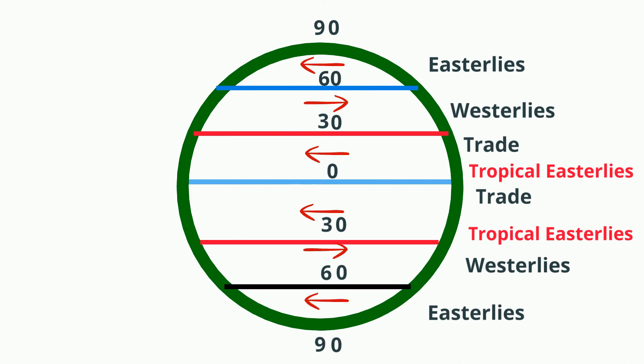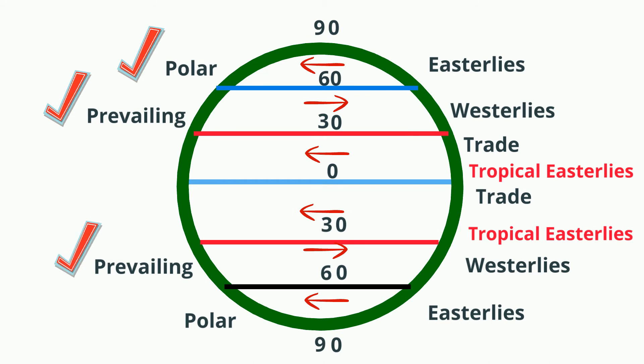Now all we have to do is add polar and prevailing. So we have the names of all the winds and we have the locations. Now here's a bonus for directions. They don't blow exactly east to west. They are either moving northeast or southwest. So here's what you do.